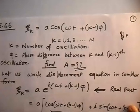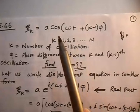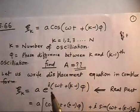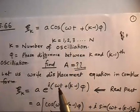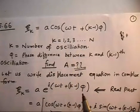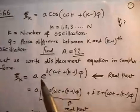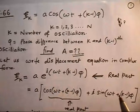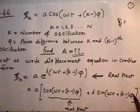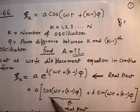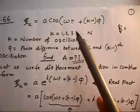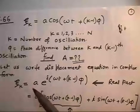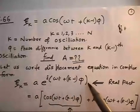I can write x_k in complex notation as a·e^(i(ωt + (k−1)φ)). Expanding this gives a·cos(ωt + (k−1)φ) + i·a·sin(ωt + (k−1)φ). The real part of this expression is exactly x_k, so x_k is the real part of the complex exponential.